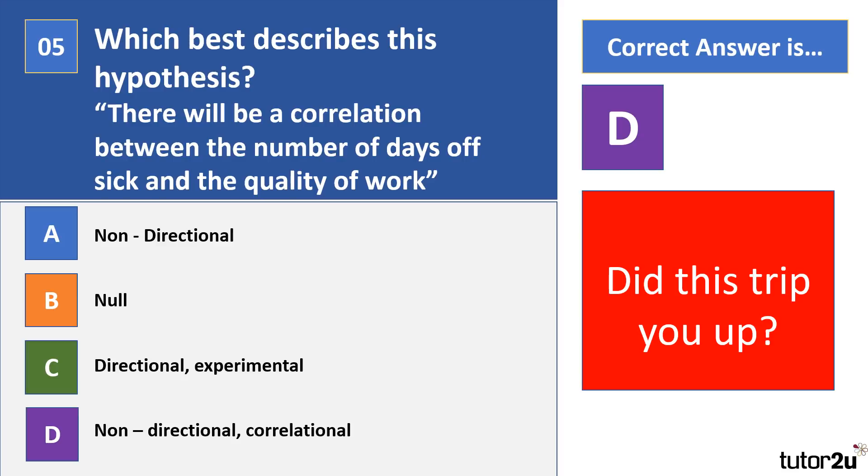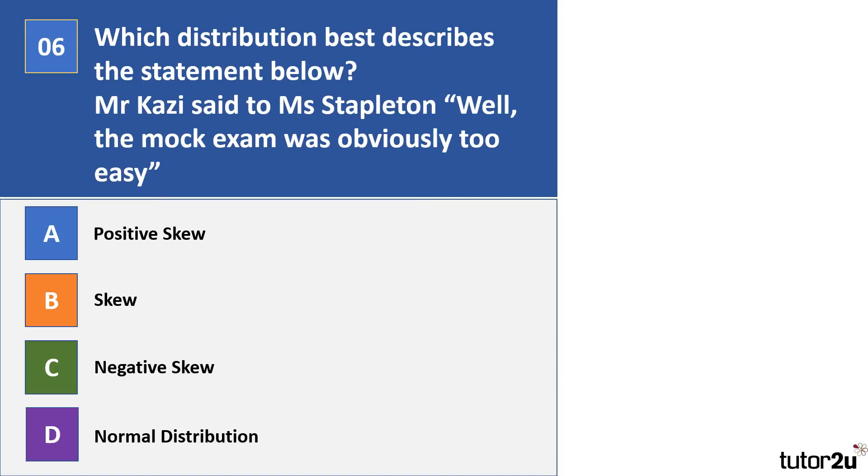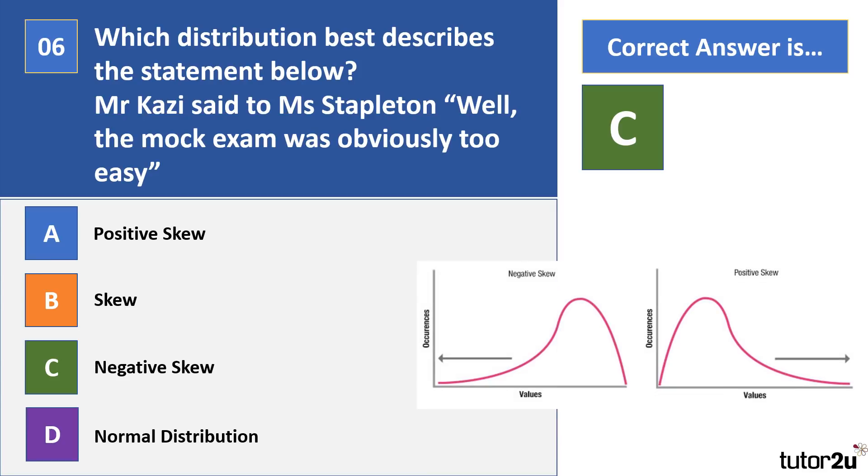Question six: Which distribution best describes the statement below? Mr. Kazzy said to Miss Stapleton, 'Well, the mock exam was obviously too easy.' Take your time to think about this one. You might even want to draw some diagrams, so pause your video. Right, the correct answer here is C.